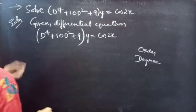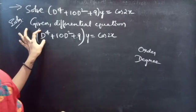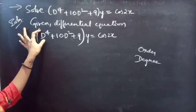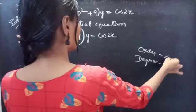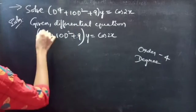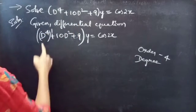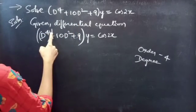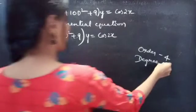Firstly, let's find the order and degree of the given differential equation. Identify the highest derivative. Here, D⁴ is the highest derivative, so our order will be 4. And the highest power of the highest derivative is the degree. Here, 1 is our degree.